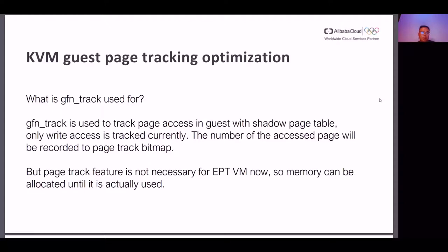Let me talk about GFN tracker first, because this is a relatively easy problem. GFN tracker is used to track page access in guest with shadow page table. Currently, only read access is tracked. The number of accesses to the page will be recorded to the page track bitmap. But the page track feature is not necessary for EPT VM now. So memory can be allocated until it is actually used.